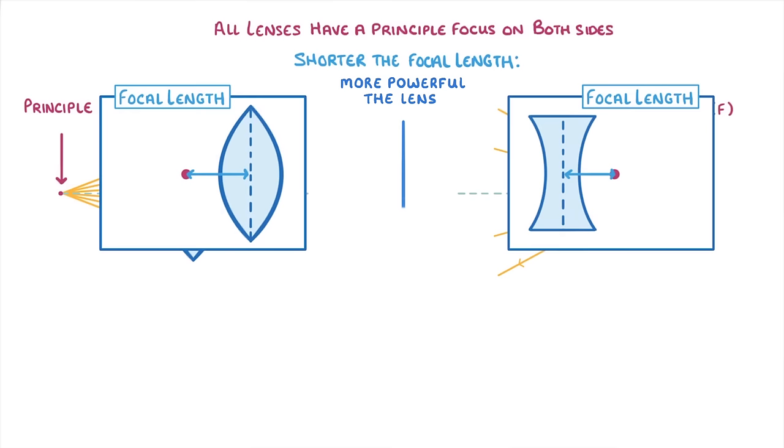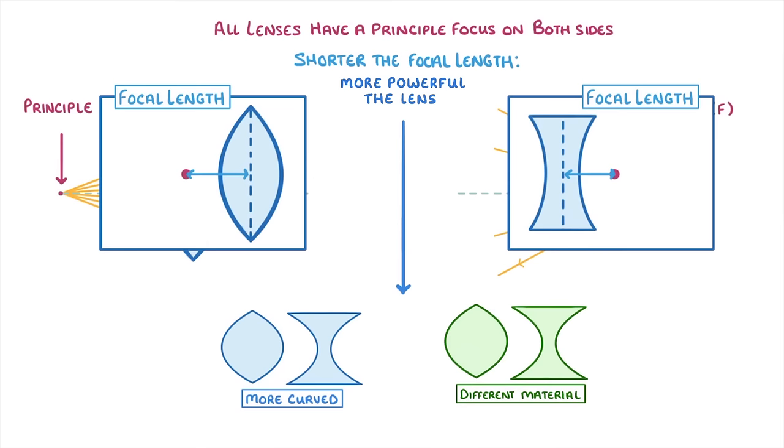In order to make a lens more powerful, we need to either make it more curved, or use a different material that naturally refracts light more strongly.